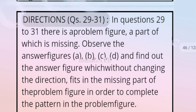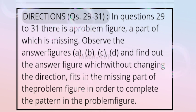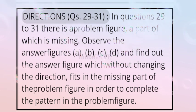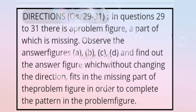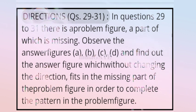For question 27, the correct answer is option C, because with the exception of option C all others form a right angle, but option C does not form a right angle. For questions 29 to 31: a part of the figure is missing — observe answer figures and find which one fits without changing direction to complete the pattern.